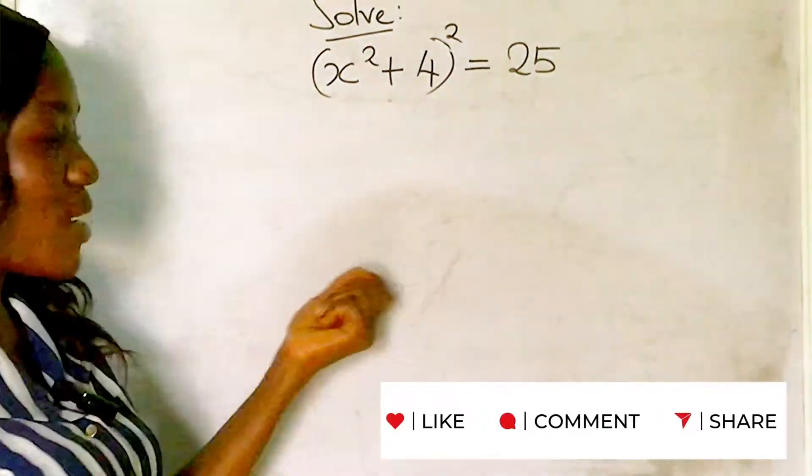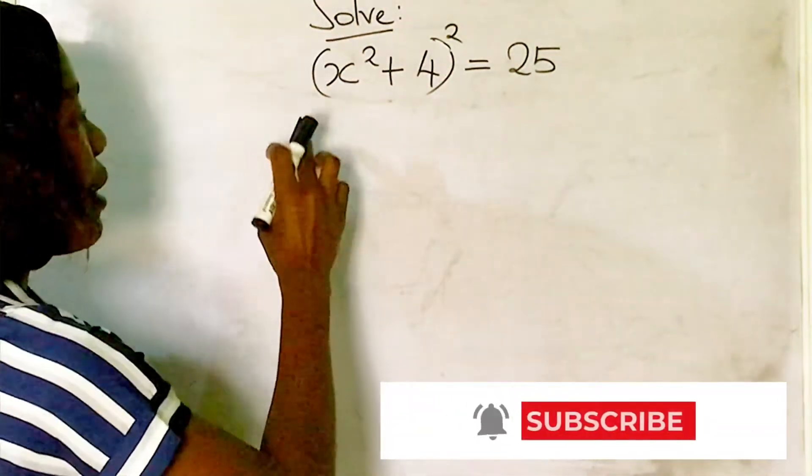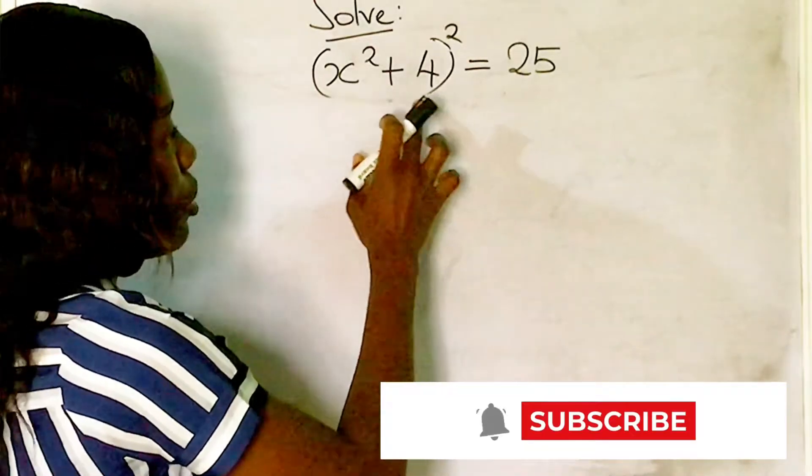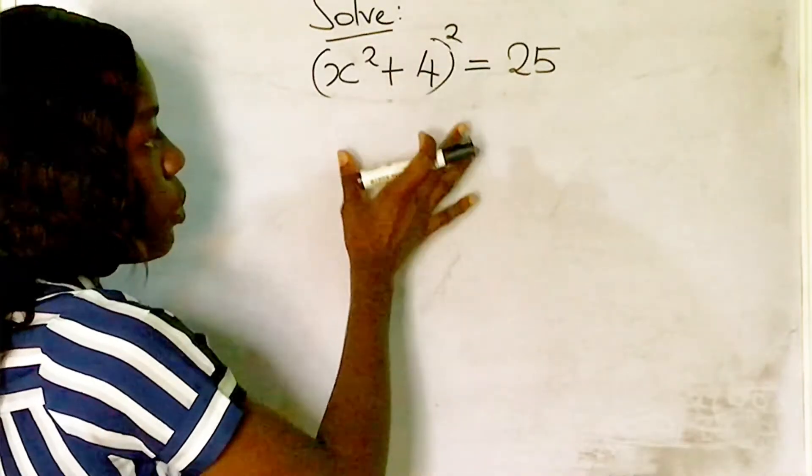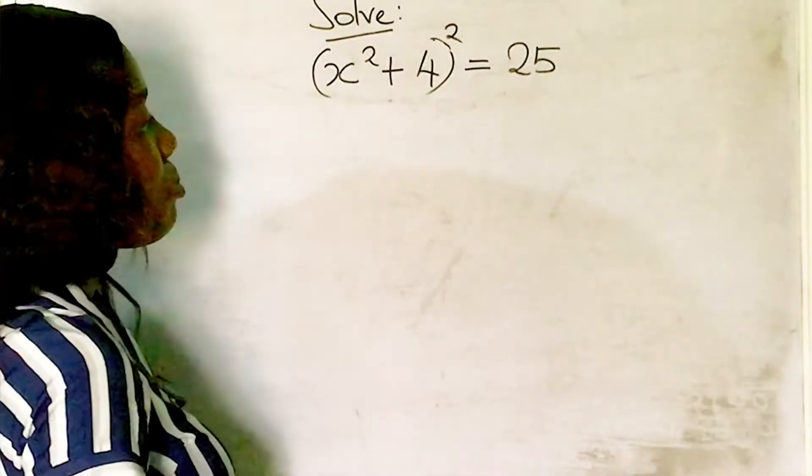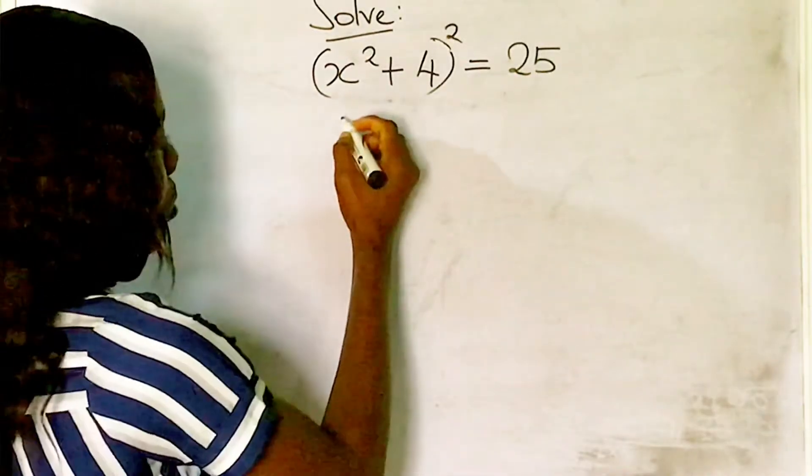Hello guys, welcome to my channel. Let's solve this equation: (x² + 4)² = 25. We are asked to solve this.